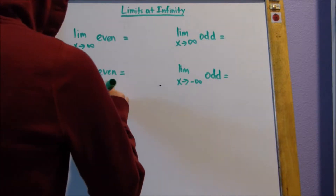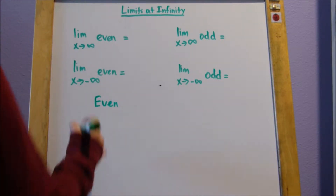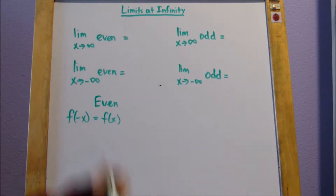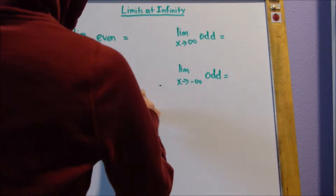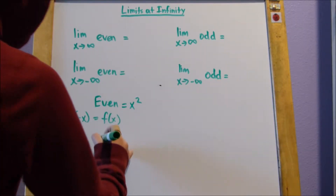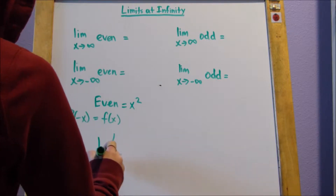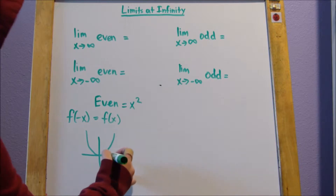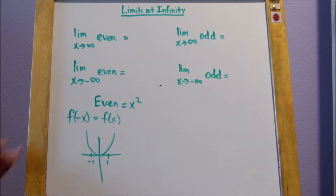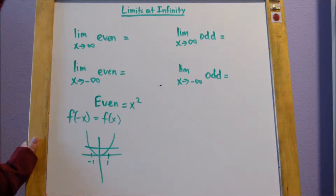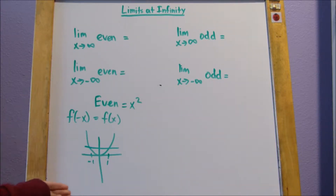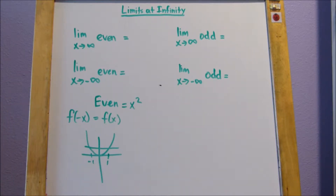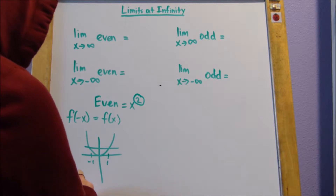Even functions satisfy f of negative x equals f of x. An example of an even function is x squared. If I have 1 on this side and negative 1 on this side, their y values are the same. f of negative 1 and f of 1 are the same, so this is even.